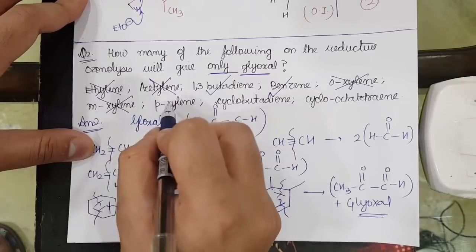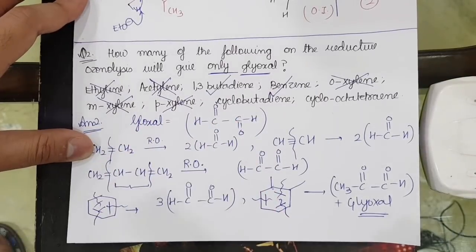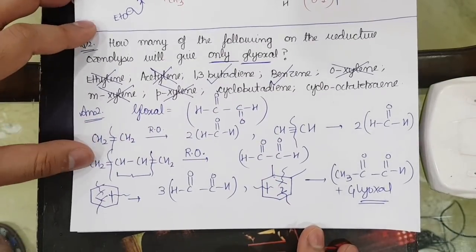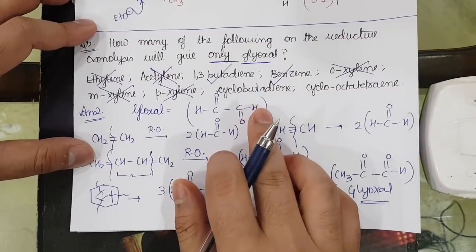Similarly meta-xylene, the CH3 goes to meta position, and para-xylene, it goes to para position. So they will also not give correct answers. Now if I move on to cyclobutadiene.